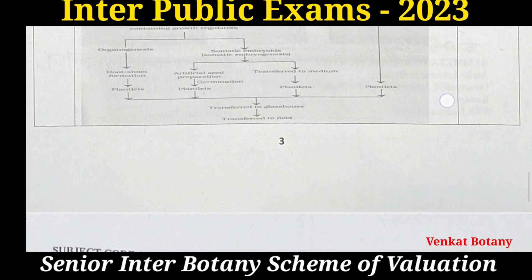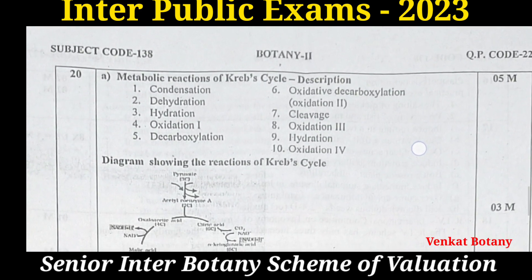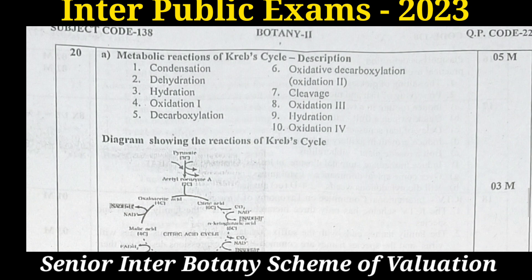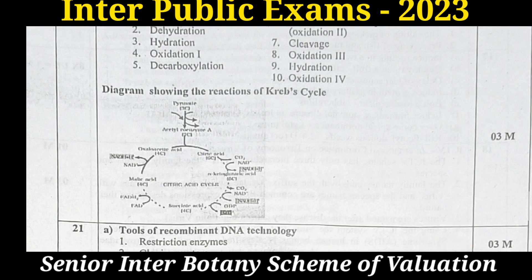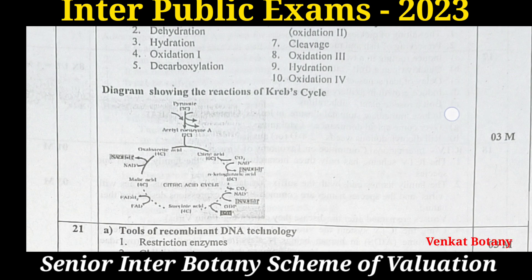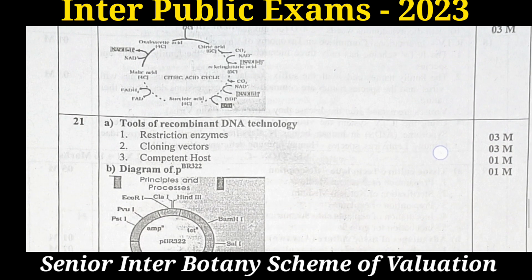Question 20: Explain the reactions of the Krebs cycle. There are a total of 10 reactions in the Krebs cycle. The reactions carry five marks. The diagram showing the reactions of the Krebs cycle carries three marks. Total is 8 marks.